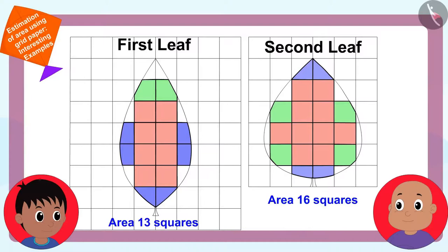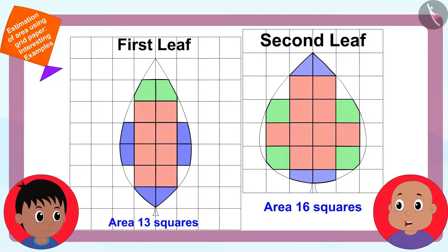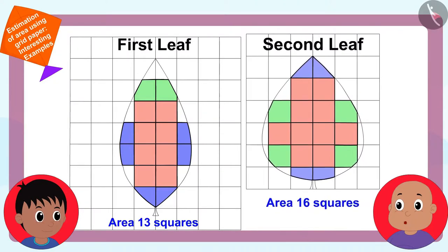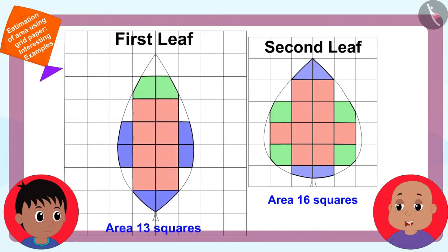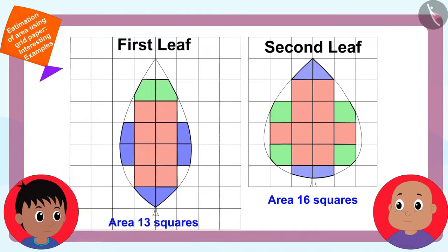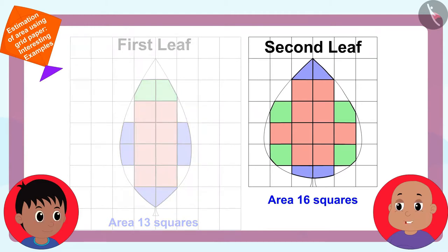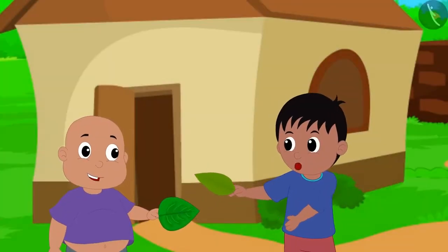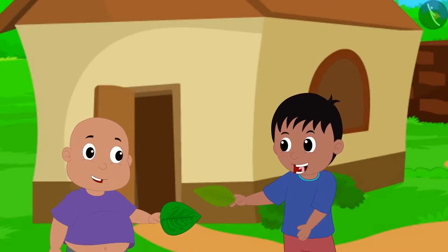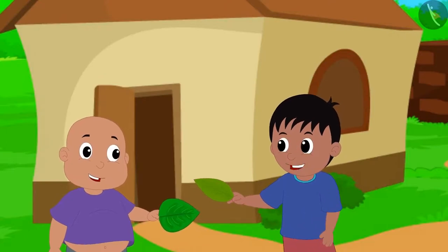Bablu also found the answer to this question just like you. Raju, there are sixteen squares in the area of the second leaf and thirteen squares in the area of the first leaf. This means that the second leaf is larger than the first leaf. Bablu told Raju. Well done, Bablu. We came to know which is the biggest leaf. And you also learned to find the area using a grid paper.